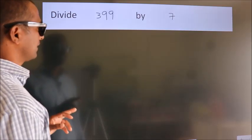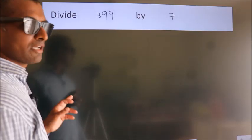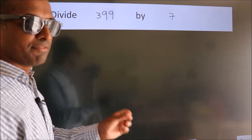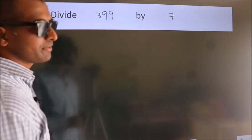Divide 399 by 7. To do this division, we should frame it in this way.